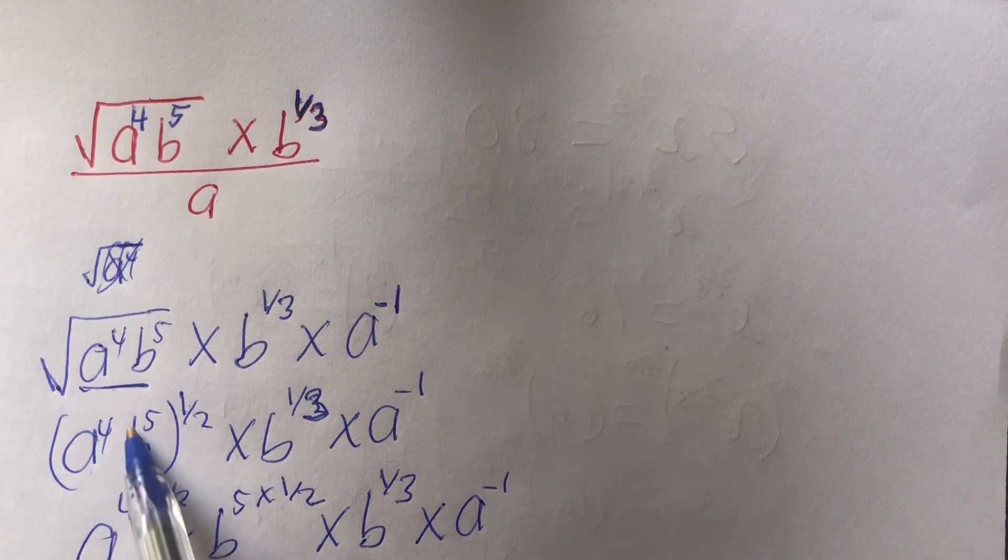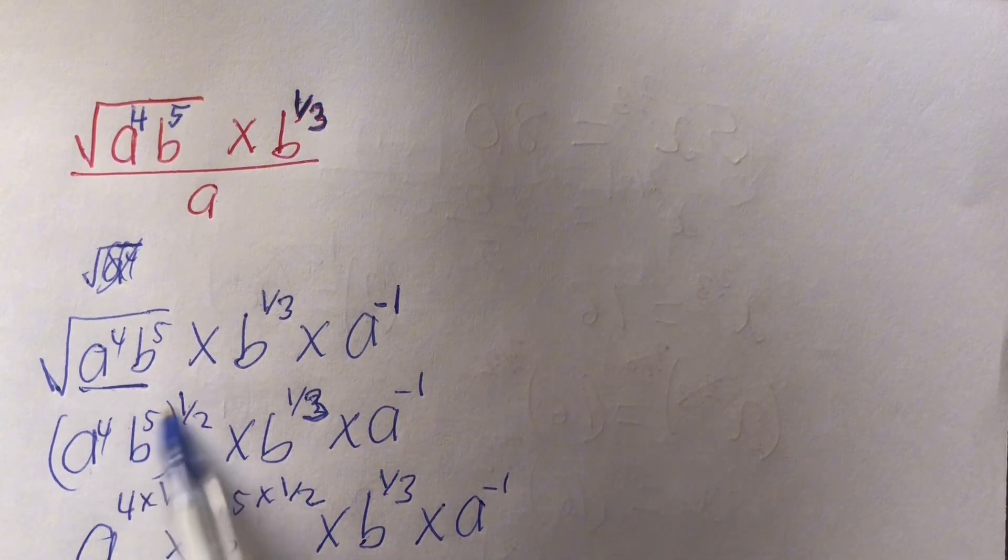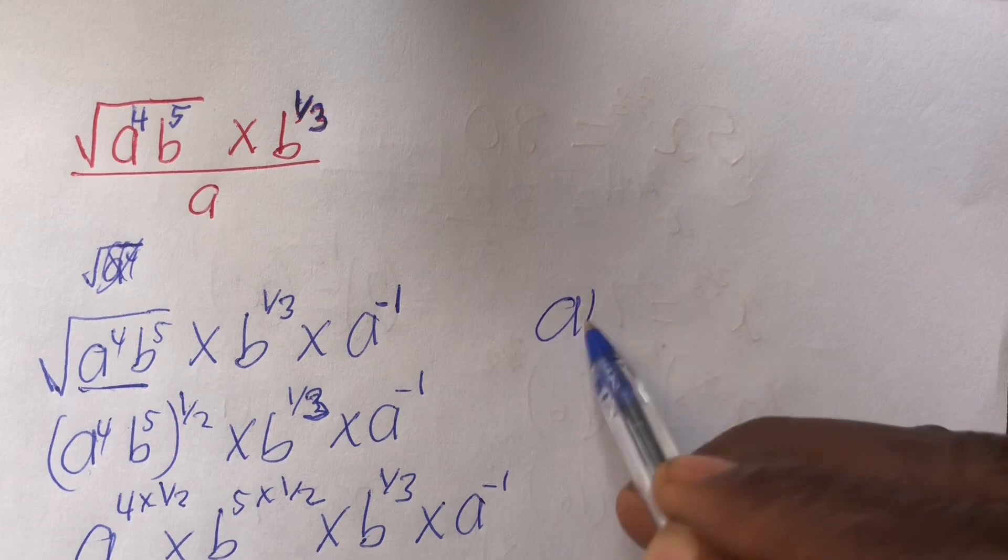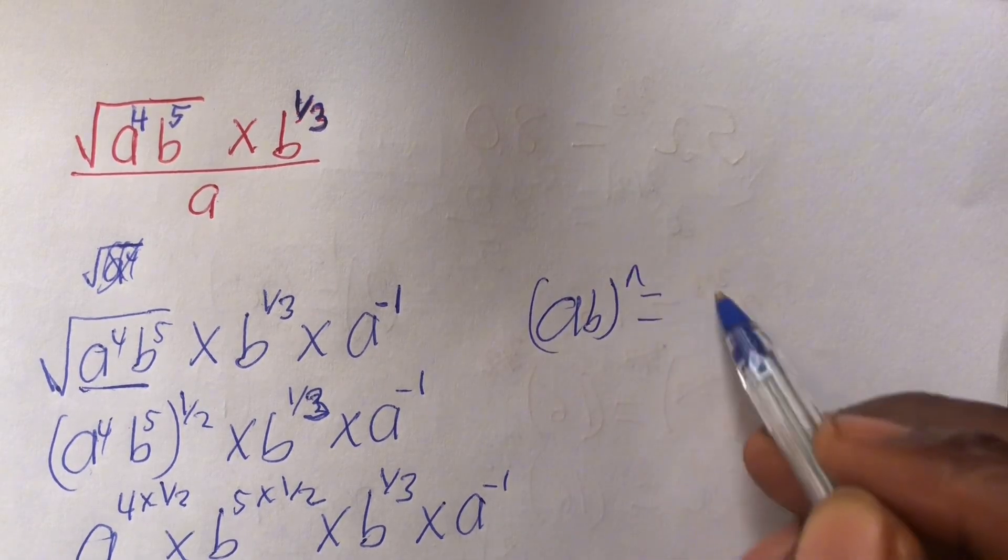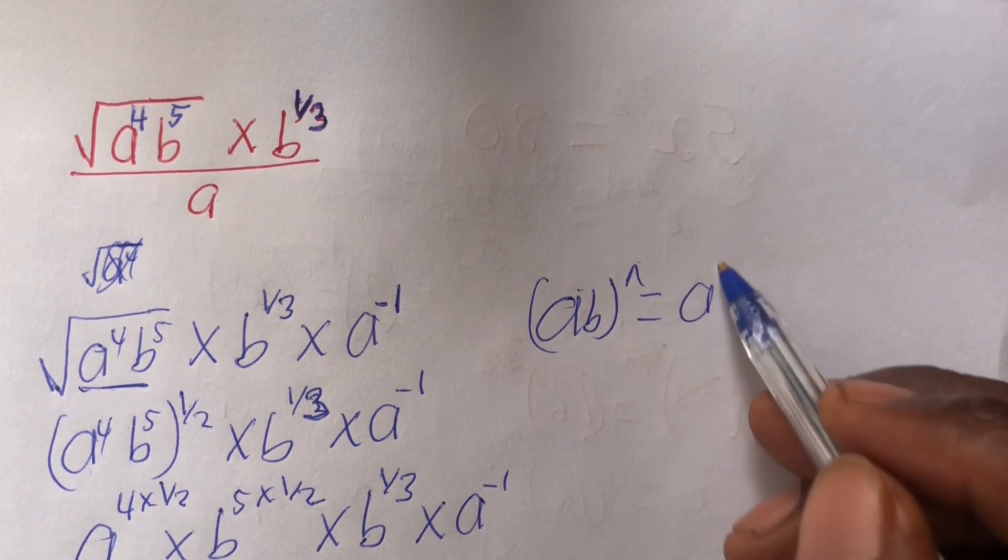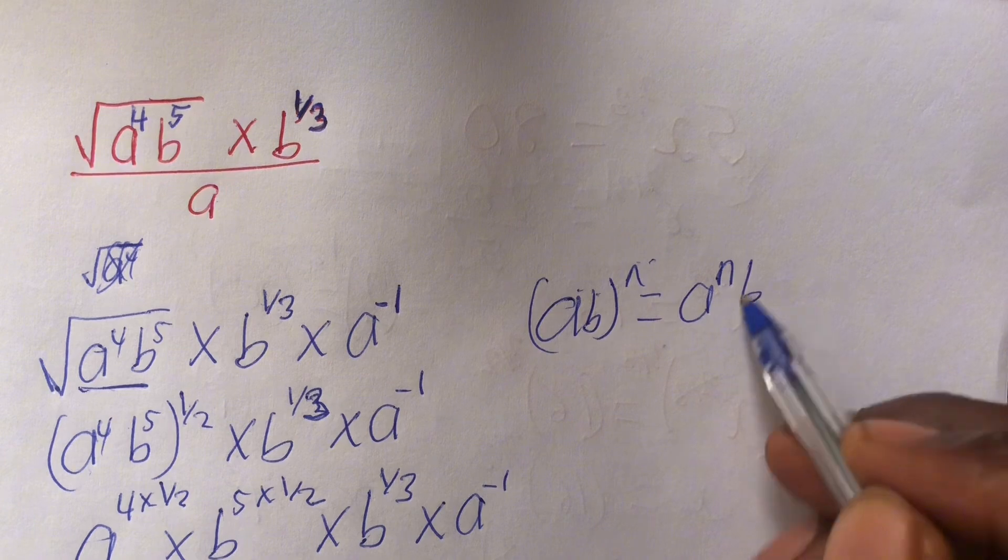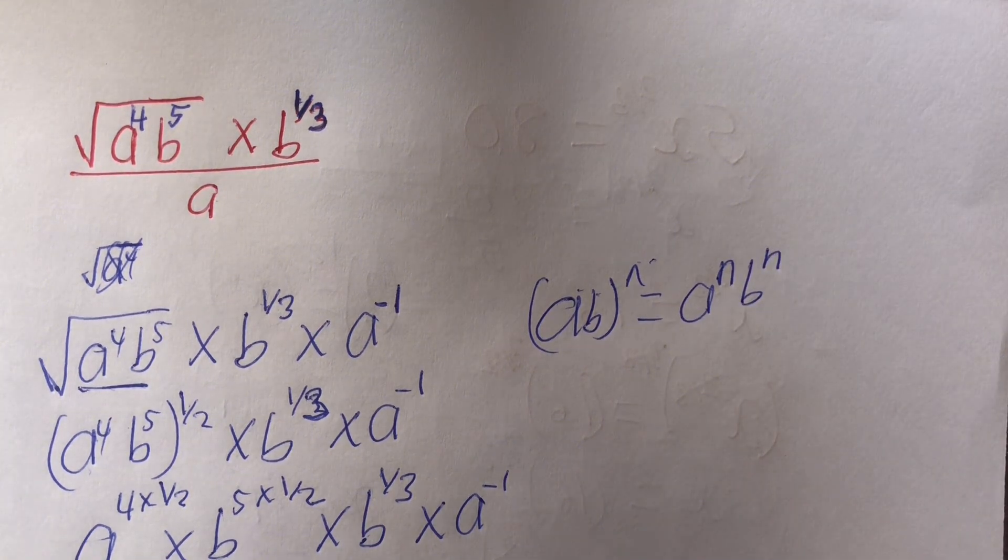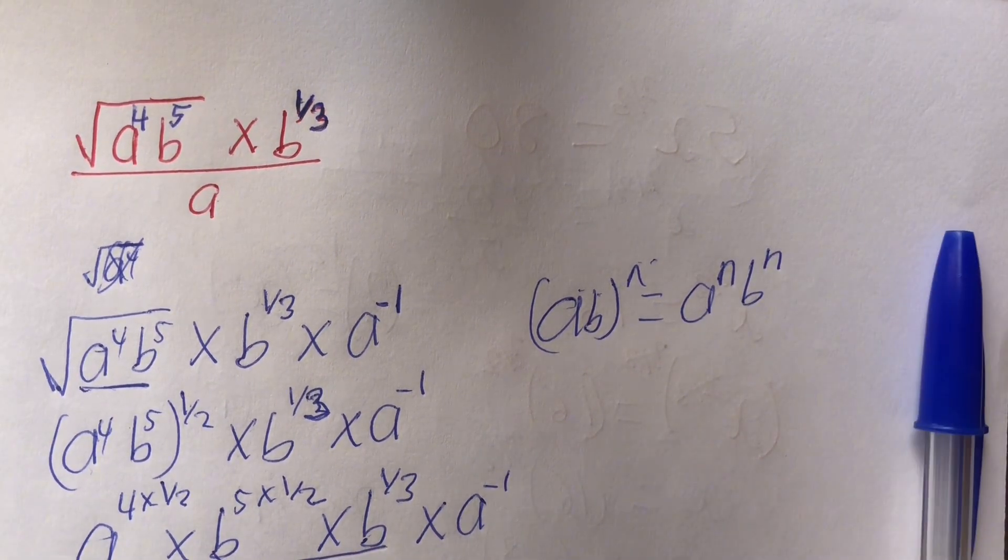Here, we have raised a power to a power. So we are multiplying the powers together. That is, if I have a to the b power n, I will get a power 1 times n. So, we do this together.